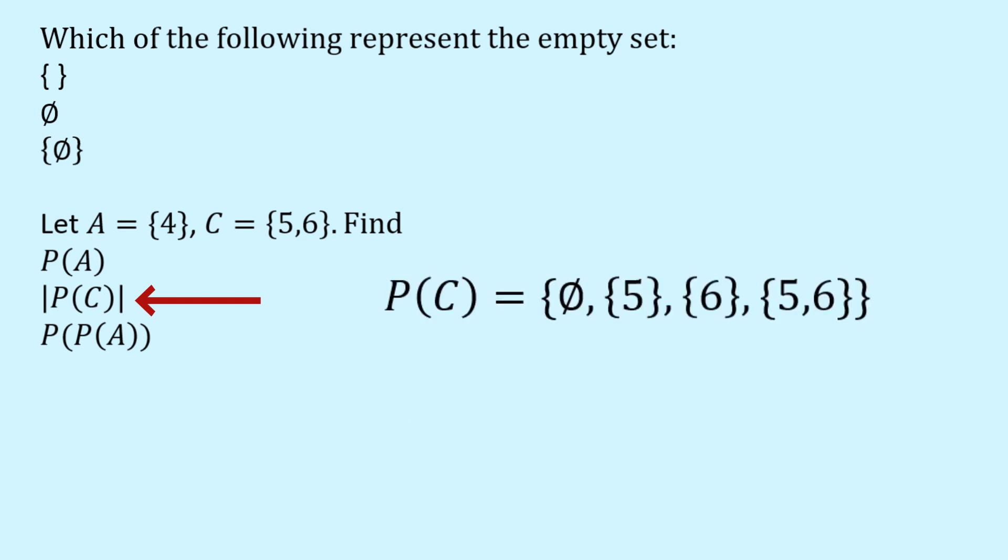So let's do that. So the power set of C first. So we use the curly brackets, and now we look at every subset of C. So the first subset of C is the empty set. Then I'm going to put a set containing five. That's a subset of C. Then a set containing six. That's another subset. And then the final subset will be the subset containing five and six, which is actually C itself. So C is the subset of C.